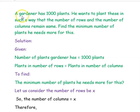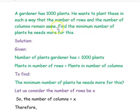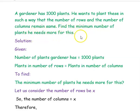The first example: a gardener has 1000 plants. He wants to plant these in such a way that the number of rows and the number of columns remain the same. Find the minimum number of plants he needs more for this.